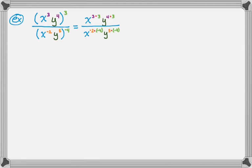Just to make sure — we have x to the third times y to the fourth, all raised to the third. So that's really x to the third to the third times y to the fourth to the third, which is where power to a power came in, which is why we're multiplying. Let's clean this up.